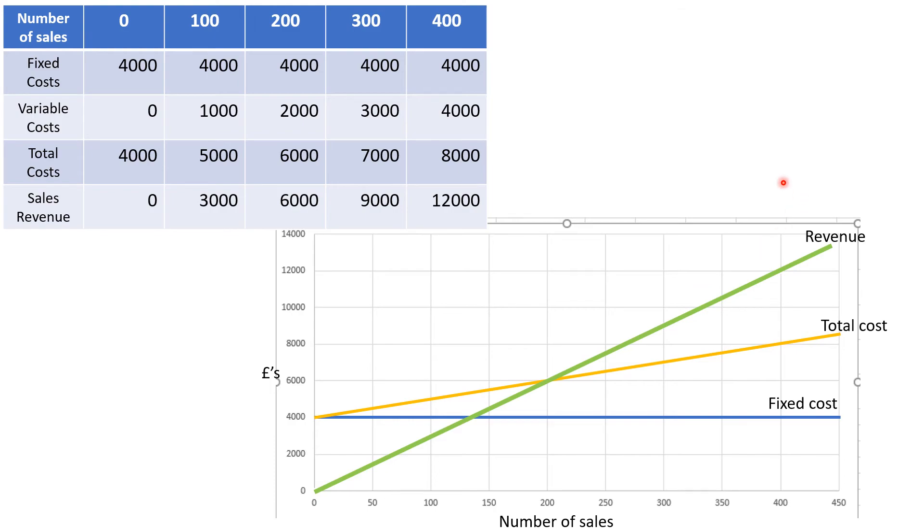One other way that they will do this in an exam is give you these three lines and you must be able to label them up revenue, total cost and fixed cost. So the things to remember are fixed cost is always horizontal, the total cost starts where the fixed cost cuts the y-axis and revenue always starts at 0,0.